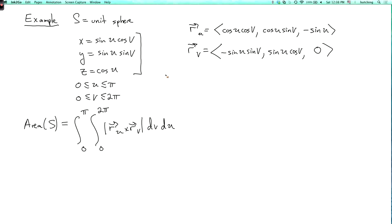And then what's the cross product? So the first term is this times zero minus this times this. So I get sine squared u cosine v. The second term, I have this times this, which is sine squared u sine v, minus this, which is zero.